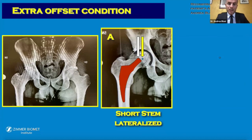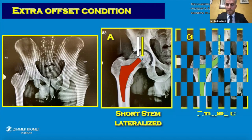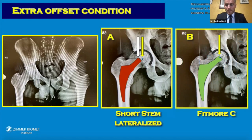In this extra offset case, we can see a short stem that is lateralized. That stem may appear able to reach the new center of rotation, but this hip would be at risk of early dislocation. If we use a Fit More C, we can reach the new center of rotation and the hip will have high stability.